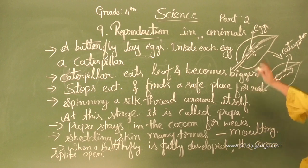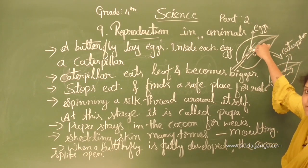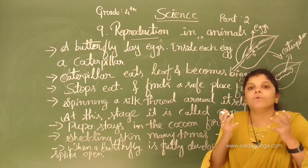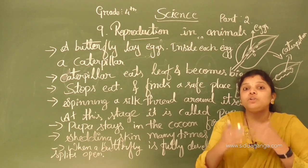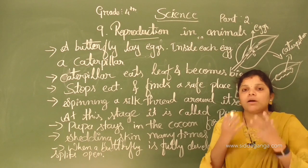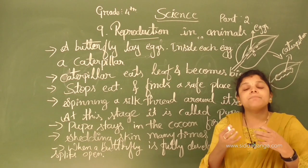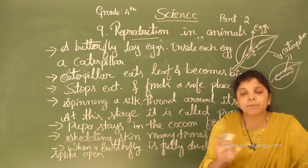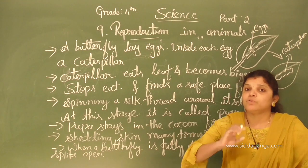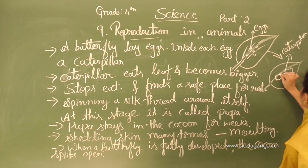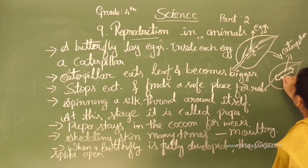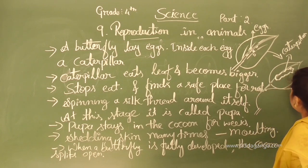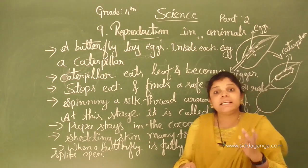First, the butterfly lays eggs. Inside each egg contains a caterpillar or a larva. This larva starts to eat leaves and becomes bigger. That caterpillar stops eating and finds a safe place for rest. They start spinning the silk thread around itself.